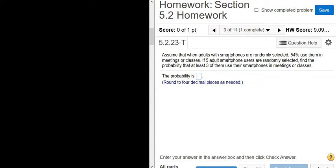Assume that when adults with smartphones are randomly selected, 54% use them in meetings or classes. If five adult smartphone users are selected, find the probability that at least three of them use their smartphones.